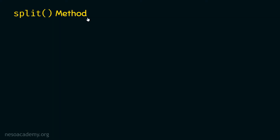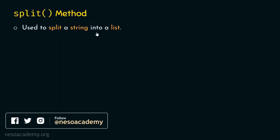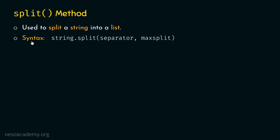So, what is the split method? The split method is used to split a string into a list. It divides a string into substrings and stores them as individual items of a list. The split method is applied on a string using the dot operator and accepts two arguments: the first is the separator, and the second is max split. The separator tells the position at which the split should occur — by default, any whitespace character is a separator. Max split tells the maximum number of splits allowed; by default, max split is minus one, which means there is no limit on the number of splits.